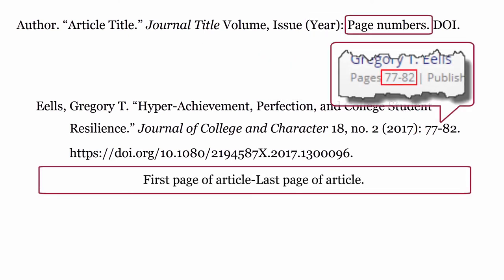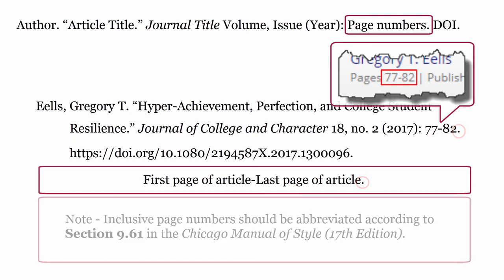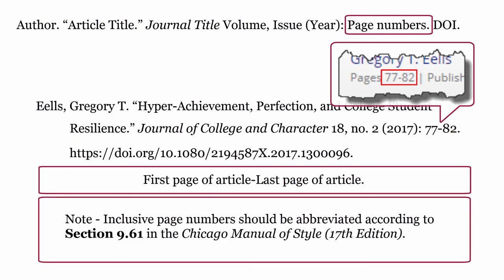Page numbers: these are the page numbers of the journal article — first page of the article, dash, last page of the article. End the page numbers with a full stop. Inclusive page numbers should be abbreviated according to section 9.61 in the Chicago Manual of Style, 17th Edition.